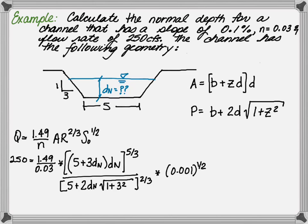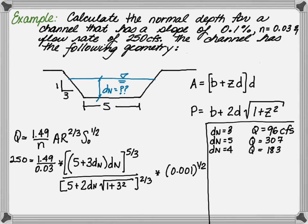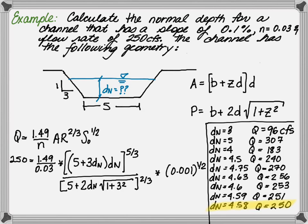With the normal depth embedded in the equation, the best way to solve this is using GoalSeek within Excel. But if you want to solve it by hand, you will need to use the bisection rule. First, let's assume DN is 3. We would calculate a flow rate of 96 CFS, which is not equal to 250. Next, we would try a DN of 5 feet and the flow rate resulting would be 307 CFS, which is not equal to 250. Now we would pick halfway between 4 feet, which is bisecting the depth, results in a flow rate of 183. We repeat this until we reach a DN of 4.58 feet and a flow rate of 250 CFS.